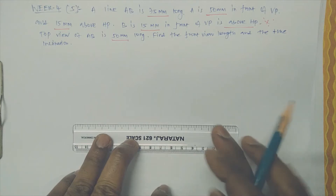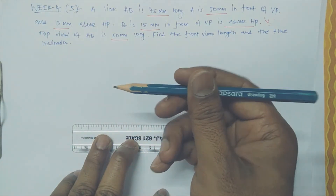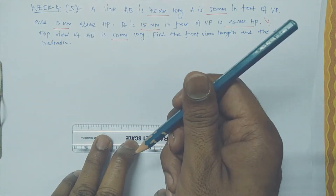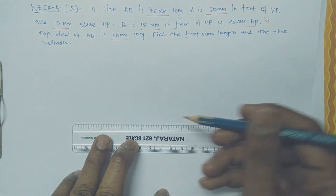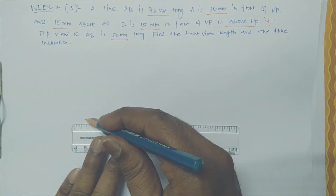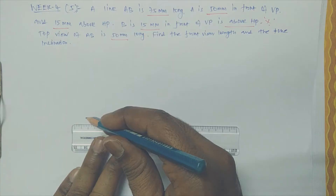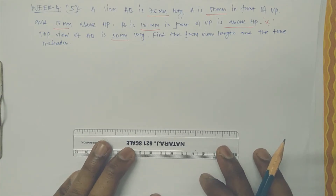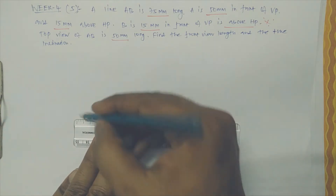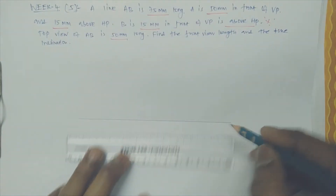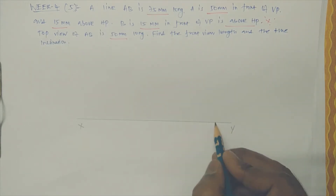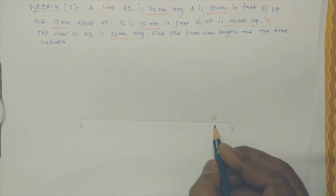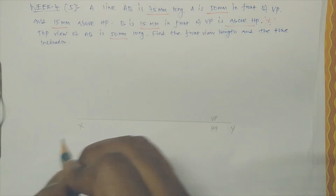This question involves a line tilted with respect to both the horizontal and vertical planes, so we are going to make the projection for this. Let me draw the reference line. The top view is 50mm long, so I need to mark 50mm here. This is the reference line X and Y. In VP we give dash alphabets, and in HP we use plain alphabets for identification.